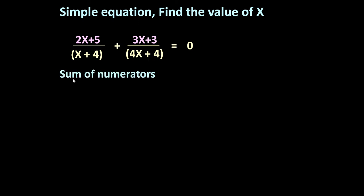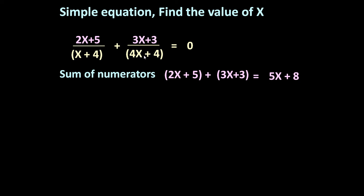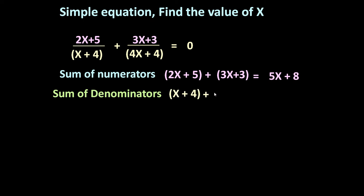To solve such types of problems, first let us find out the sum of numerators — the numerator means the upper part, written in pink color. Sum of numerators: 2x + 5 + 3x + 3 = 5x + 8. Now sum of denominators: x + 4 + 4x + 4 = 5x + 8.